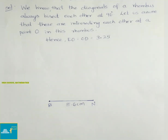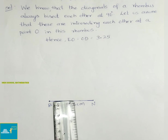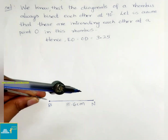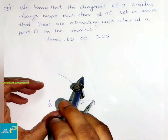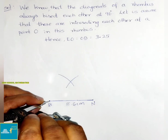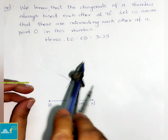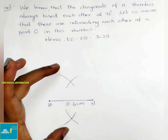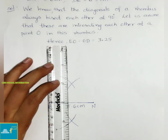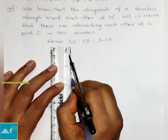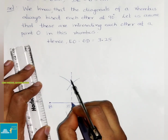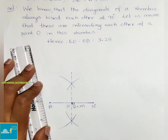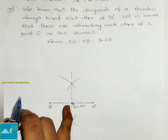Draw perpendicular bisectors from B and N — they meet at point O. Take a radius greater than half and draw arcs from both B and N on both sides. Join them to get the perpendicular bisector as a dotted line, meeting at point O.